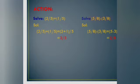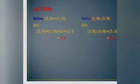We have already learned about fractions and rational numbers. Let us solve 2/5 plus 1/5. The denominators are the same, so we add the numerators: 2/5 plus 1/5 is equal to 2 plus 1 divided by 5, which is 3/5.